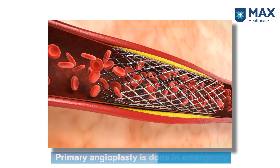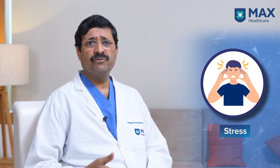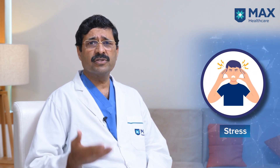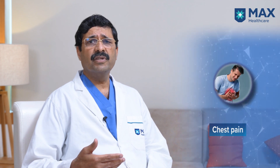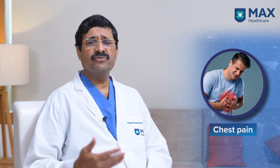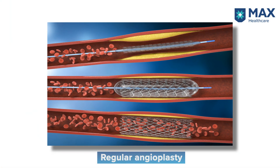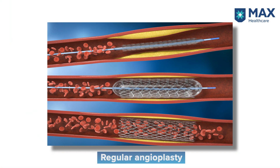The other type is conventional angioplasty, where someone is coming with a positive TMT, a positive stress test, or effort-related chest pain. In that situation, if you do the angiogram and find the blockages, you perform the angioplasty — that is a regular angioplasty.